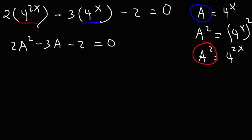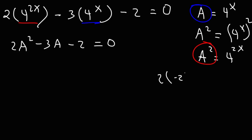Now this looks a lot easier to deal with. We have a trinomial with a leading coefficient that's not 1. To factor this trinomial, the first thing we need to do is multiply the leading coefficient by the constant term: 2 times negative 2, which is negative 4. Next, we need to find two numbers that multiply to negative 4 but add to the middle coefficient, negative 3.